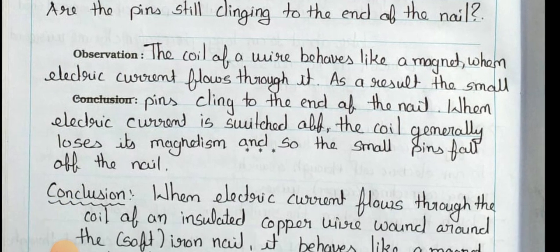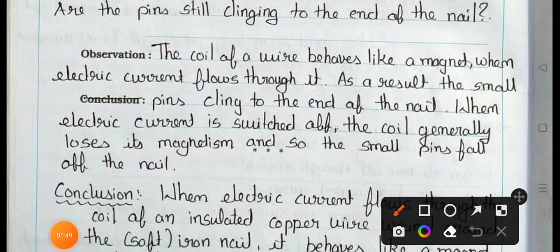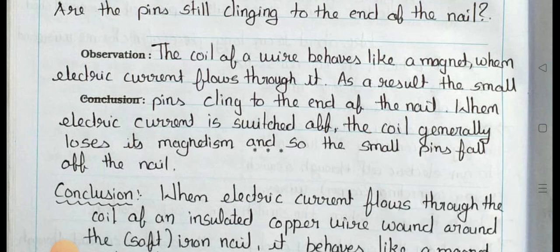Now see the observation: The coil of a wire behaves like a magnet when electric current flows through it. As a result, the small pins cling to the end of the nail. When electric current is switched off, the coil generally loses its magnetism and so the small pins fall off the nail.